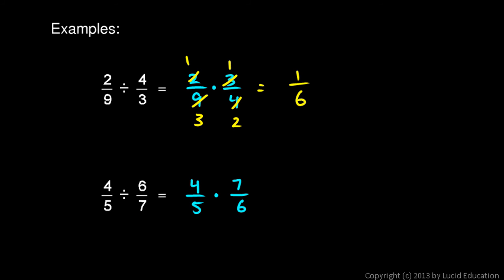So let's do this. Let's reduce the 4 and the 6, that will reduce to a 2 and a 3. And so we end up with 2 times 7, which is 14, and 5 times 3, which is 15. 14 fifteenths.